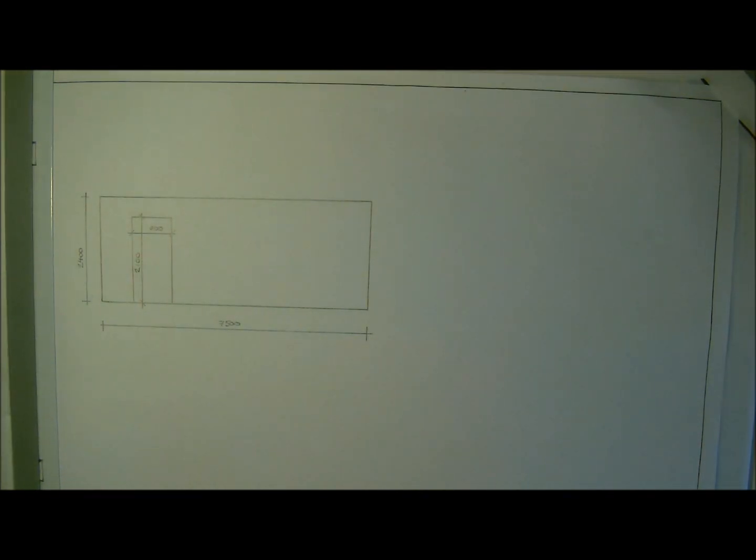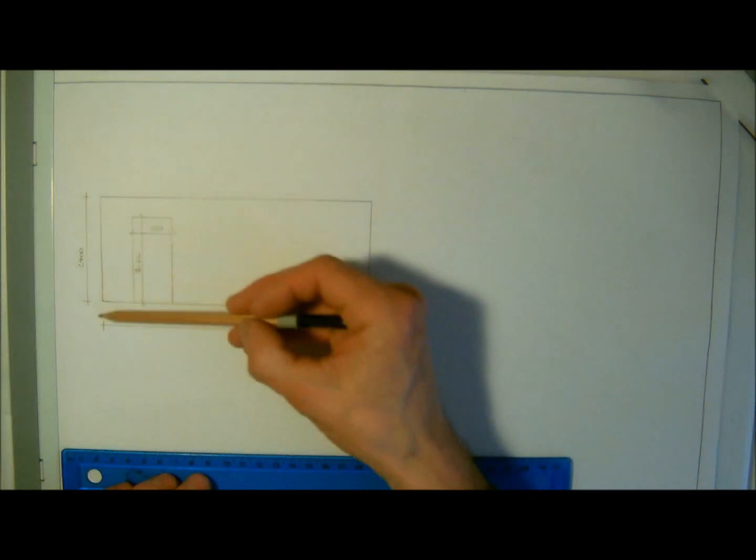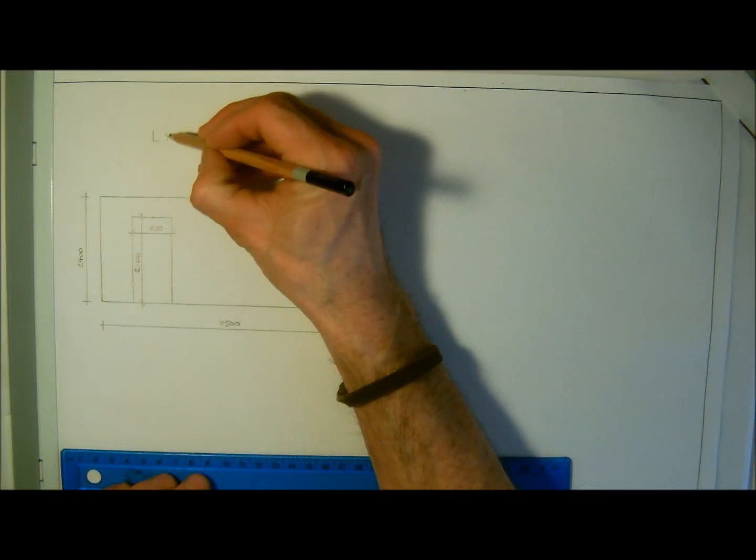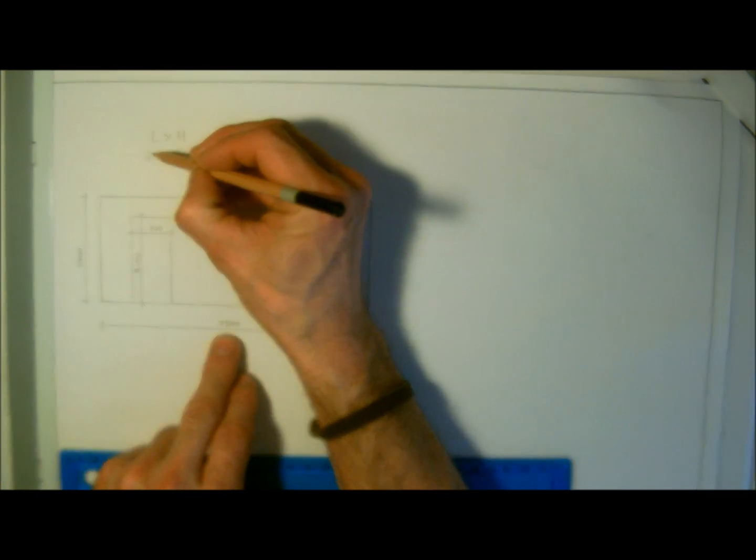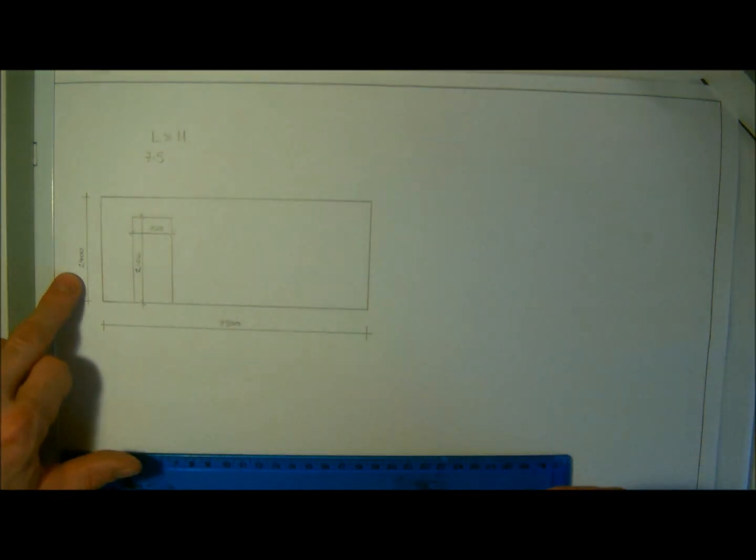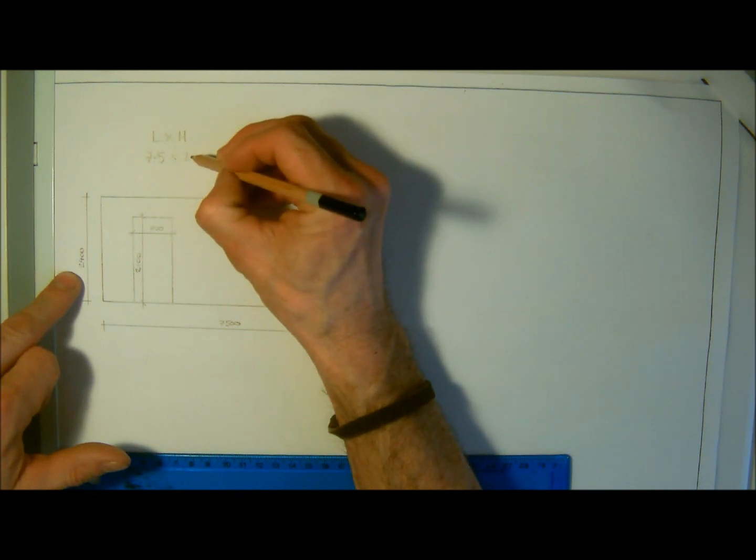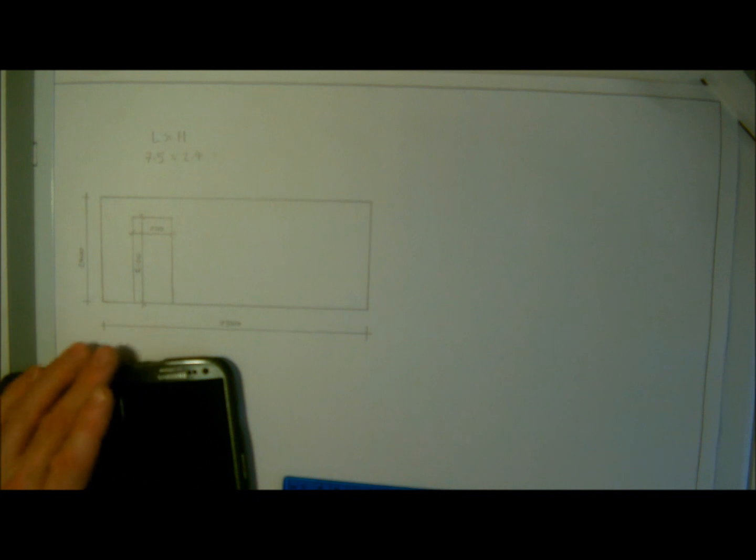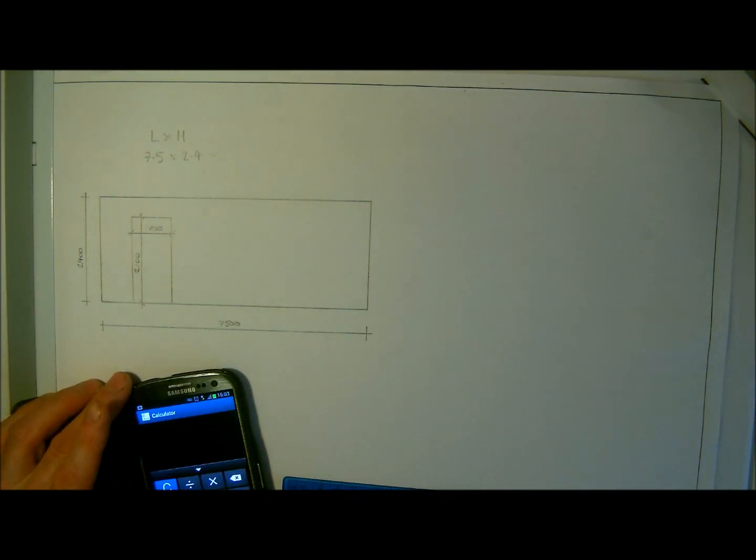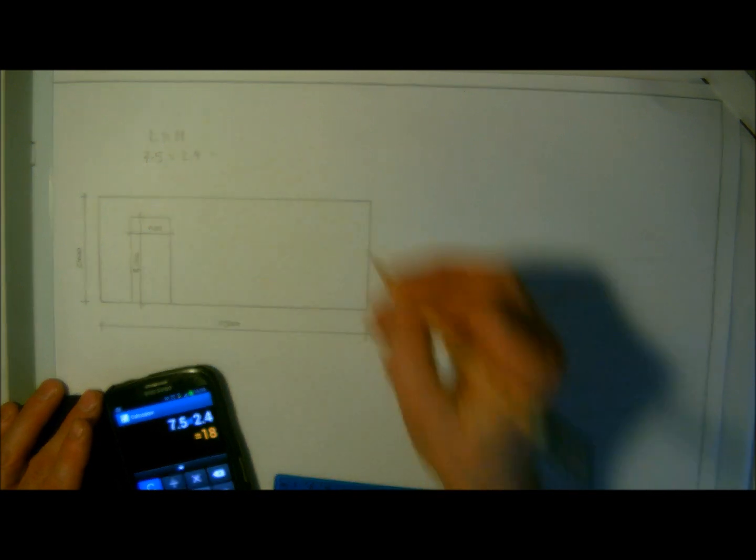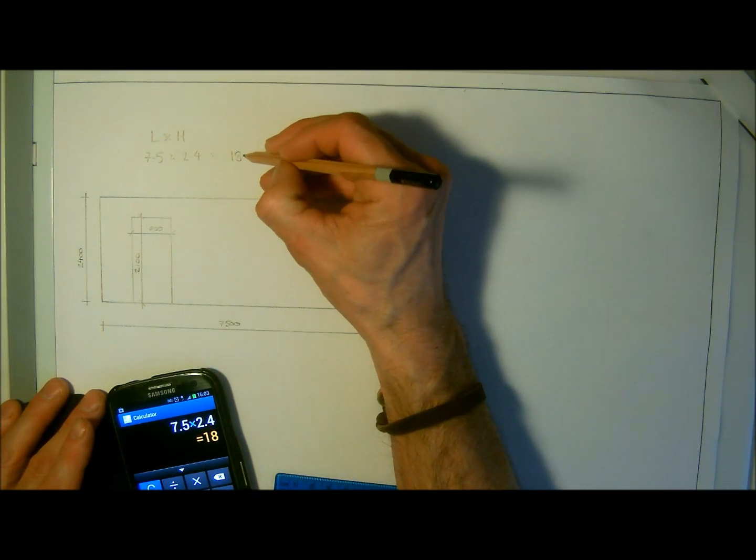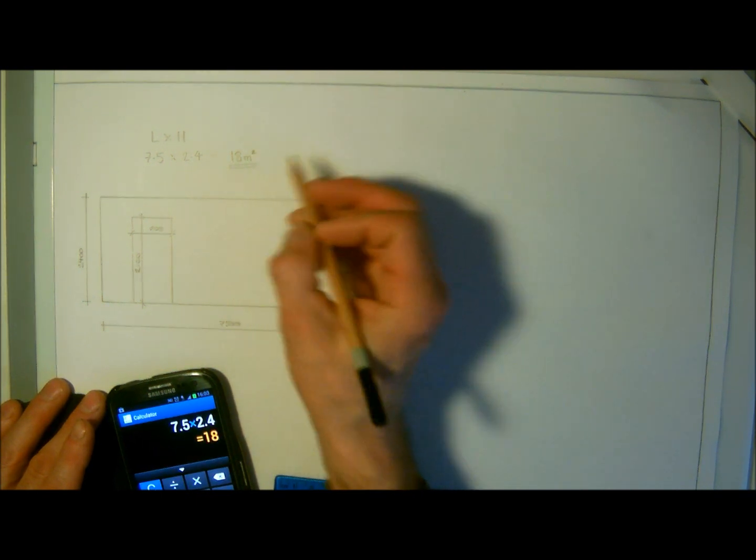We'll start off quickly by doing the brickwork. If we remember from the first lessons, the first thing we're going to do is find the total surface area. The length times the height - convert into meters, so that's seven and a half meters length and two four hundred, which is two point four meters. To get the total surface area we go seven point five multiplied by two point four equals eighteen square meters, meters squared, underlined as we always say.